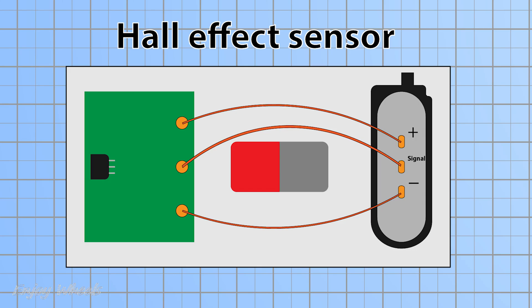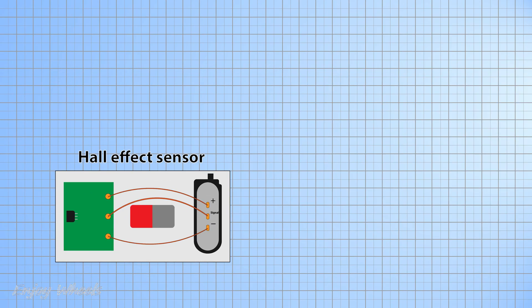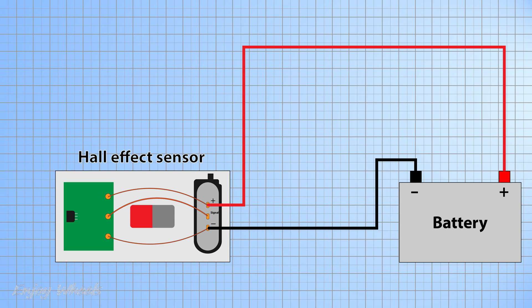You will have noticed that Hall effect sensors necessarily have three wires since they have to be powered. So we have a negative pin, a positive pin, and a signal pin. As this sensor is a 12-volt sensor, I can directly connect it to the vehicle battery.